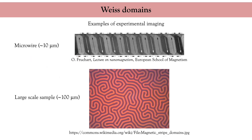Depending on which mechanism defines the anisotropy — either the magnetocrystalline anisotropy or the dipolar energy — you can define different exchange lengths for a given material. The top image is an example of diamond domains arising in microwires, and the bottom image shows a magnetic maze formed by magnetic domains in a large sample of a few tens of microns.